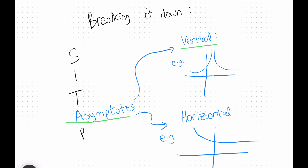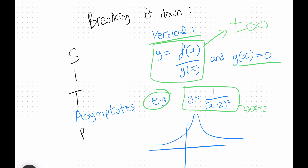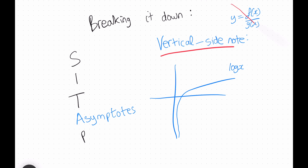Moving on to A for asymptotes, we have vertical and horizontal asymptotes. To find vertical asymptotes, your function should be in the form of a fraction with the denominator equal to 0, because dividing by 0 makes the expression go to plus or minus infinity. For example, at x equals 2, if the denominator is 0, there's a vertical asymptote there. Note that vertical asymptotes don't have to be fractions — for example, log x has a vertical asymptote at x equals 0.